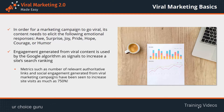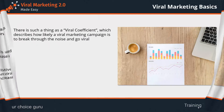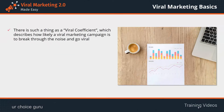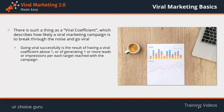Metrics such as number of relevant authoritative links and social engagement generated from viral marketing campaigns have been seen to increase site visits as much as 750%. There is such a thing as a viral coefficient, which describes how likely a viral marketing campaign is to break through the noise and go viral. The viral coefficient can be understood as the number of new targets generated by one target, or the total number of new leads or impressions referred by each lead reached by the campaign. Going viral successfully is the result of having a viral coefficient above one.